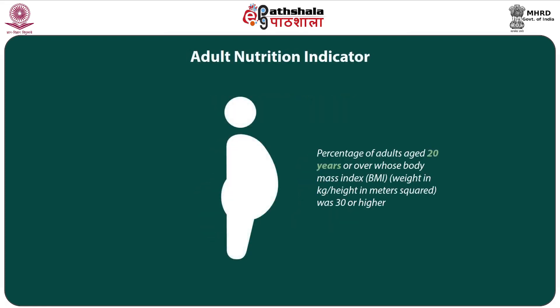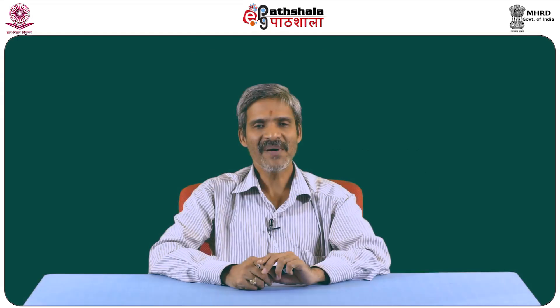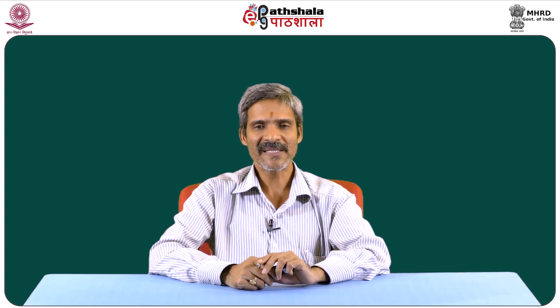The adult nutrition indicator is the percentage of obesity among adults aged 20 years or more — those whose body mass index (BMI) was 30 or higher. BMI is calculated as weight in kilograms divided by height in meters squared. If the BMI is 30 or more, the person is considered obese.